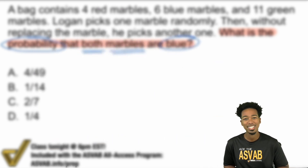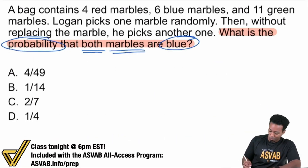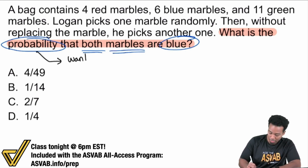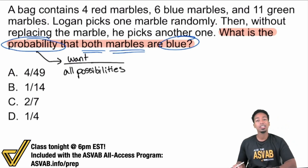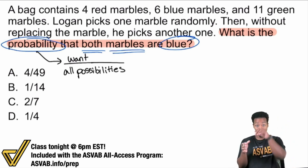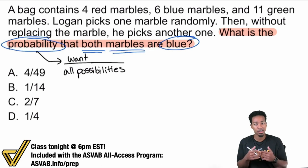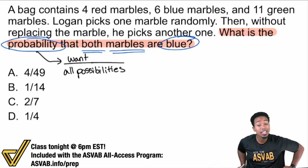If you don't know how to calculate probability, mark this down. The way that we calculate probability is this: we go ahead and divide what we want by all possibilities. Essentially it's what you want — the thing that you're trying to pick out — divided by everything that's an option, all the options available, everything together.